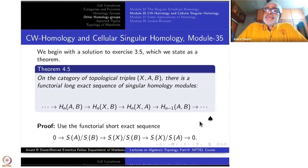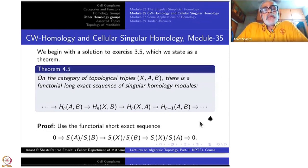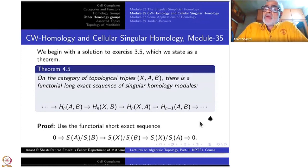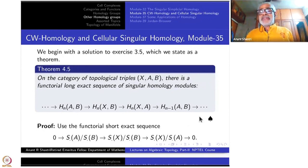Let us introduce a new homology today and then relate it to the singular homology. This is called CW homology, just like we had simplicial homology, and it is applicable only for CW complexes. Because simplicial complexes are CW complexes, it will be applicable for simplicial complexes also, but not for arbitrary spaces.